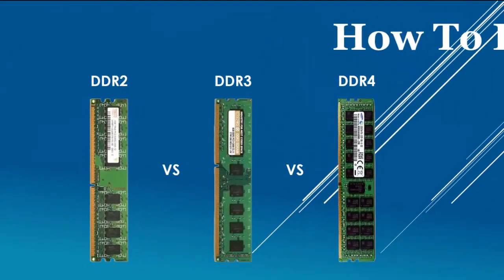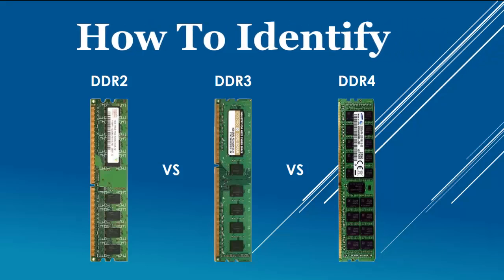Question is, how to identify which stick is DDR2, DDR3 and DDR4? For this, we draw a line exactly through the center of these sticks. The first DDR2 has a notch just under the center line.